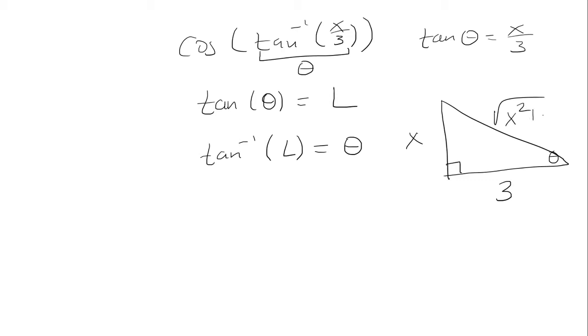Now we're left with cosine of theta, which cosine is adjacent over hypotenuse, which is 3 over the square root of x squared plus 9. And this is our answer.